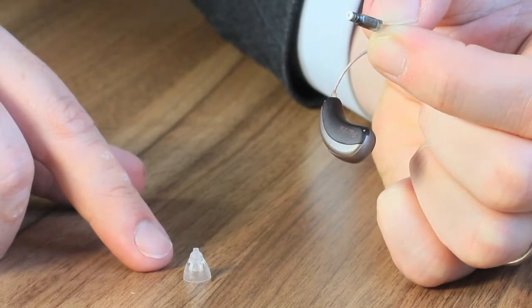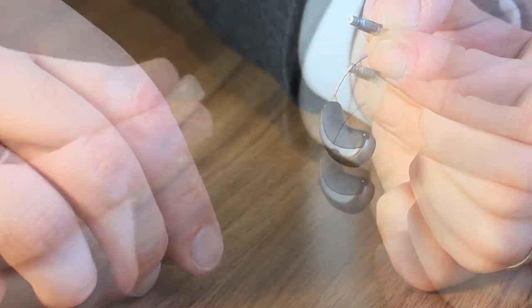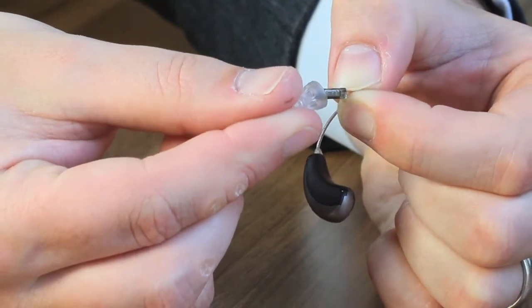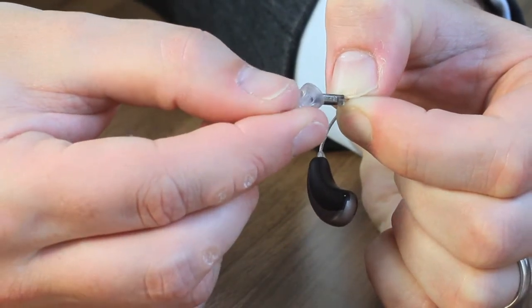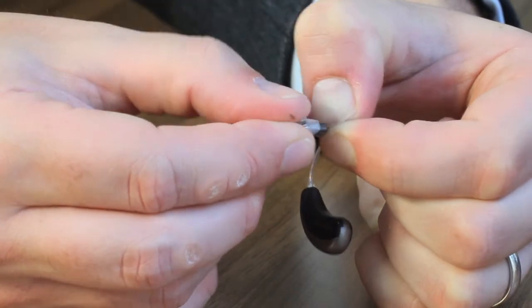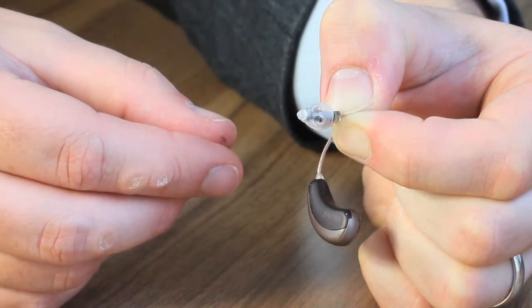Then you get the rubber dome, place it back over the receiver making sure that there is a high level of retention so that it's not going to come off in the ear.